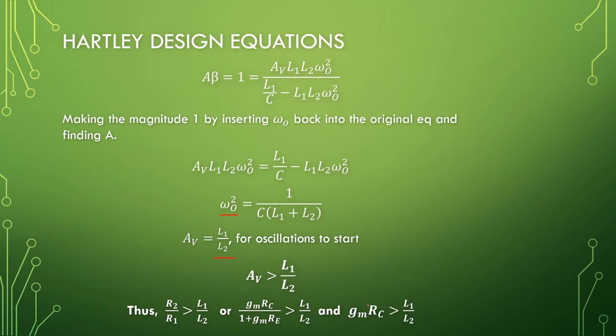The ratios of the resistors or the transconductance multiplied by the collector resistor is, the choice of that is based on our inductor ratios.